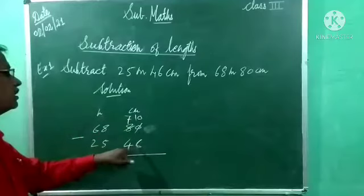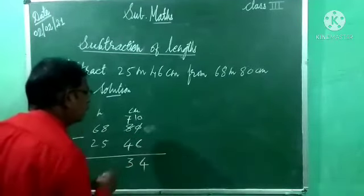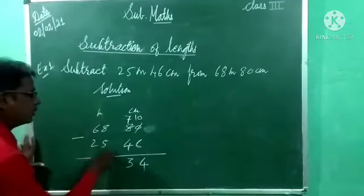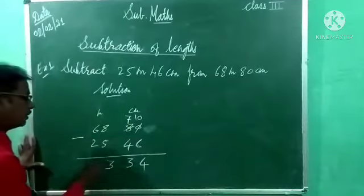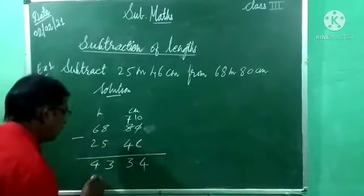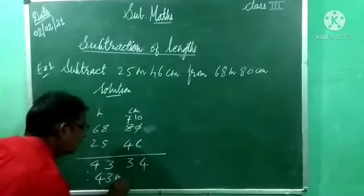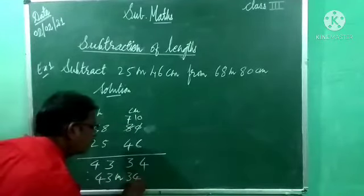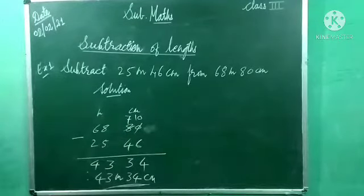Now do minus. 10 minus 6 possible. Now 10 minus 6, 4. 7 minus 4 how much? 3. 8 minus 5, 3. And 6 minus 2, 4. Understood? Therefore, 43 meter 34 centimeter is the answer. So note down this example.